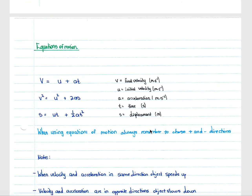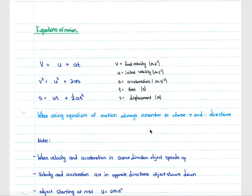We now move on to the equations of motion, which form a large part of this section. There are three main equations: v = u + at; v² = u² + 2as; and s = ut + ½at². Here, v is final velocity (m/s), u is initial velocity (m/s), a is acceleration (m/s²), t is time (s), and s is displacement (m). Always ensure velocity is in meters per second — convert from km/h using ÷3.6 — and that time is in seconds and displacement is in meters.